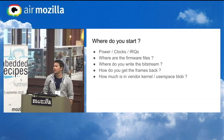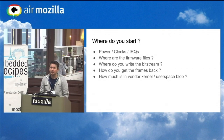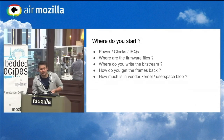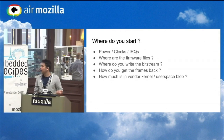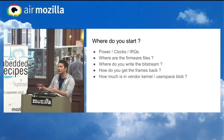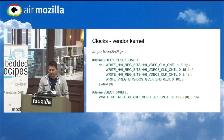So where do you start when you want to write a mainline driver for such an IP? You need to figure out: how do you set up power for the IP? How do you find the clocks and IRQs? If there is firmware — in our case there is — where are the firmware files? How do you write the bitstream to the IP? How do you get the decoded frames back from the decoder? And how much is in the vendor kernel versus hidden in the userspace binary blob that controls the driver? All that you have to figure out early.